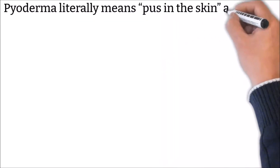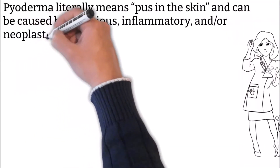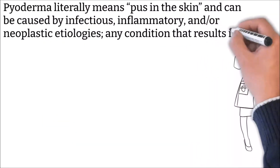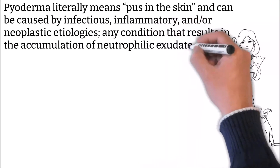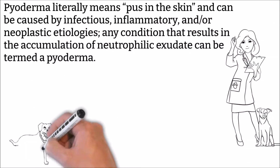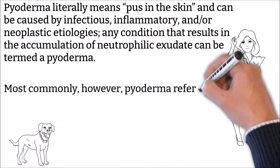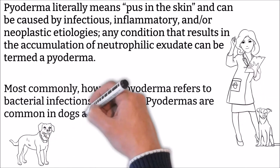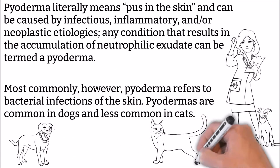Pyoderma literally means pus in the skin and can be caused by infectious, inflammatory, and/or neoplastic etiologies. Any condition that results in the accumulation of neutrophilic exudate can be termed a pyoderma. Most commonly, however, pyoderma refers to bacterial infections of the skin.